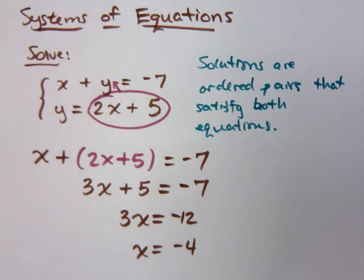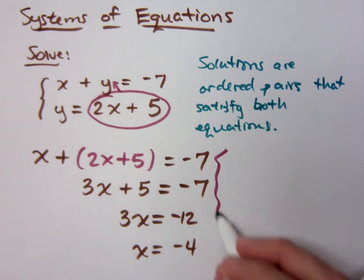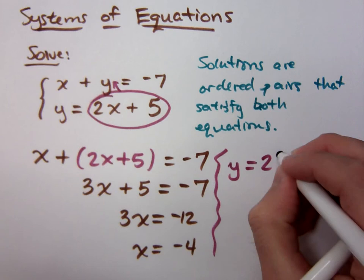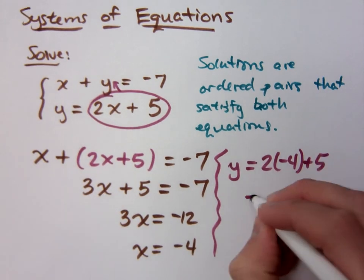Now, if X equals negative 4, we got to find Y. If X equals negative 4, plug it back in. Doesn't matter where you plug it in. You got X equals negative 4. Y equals 2 times negative 4. We'll just do the work.